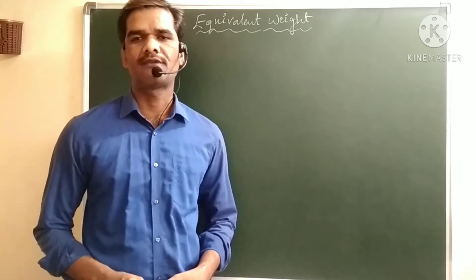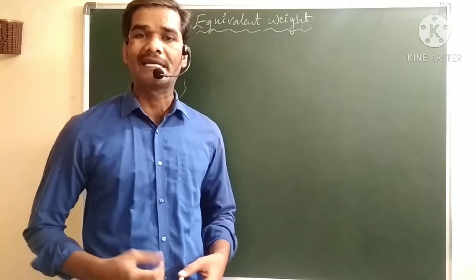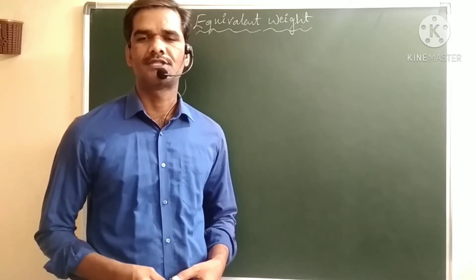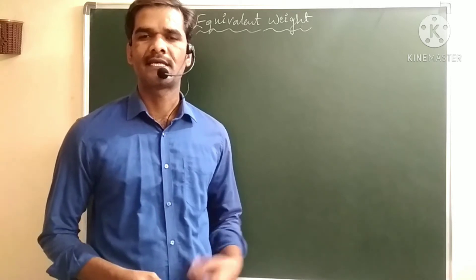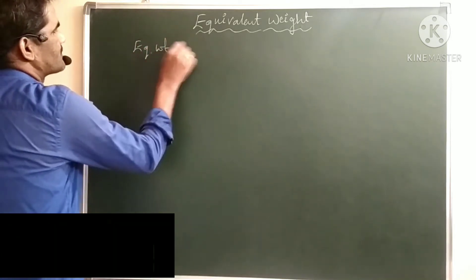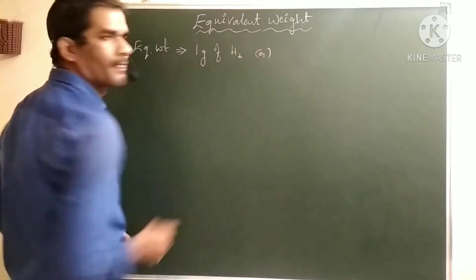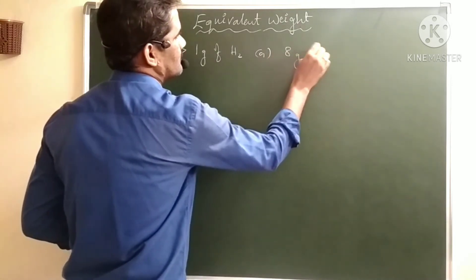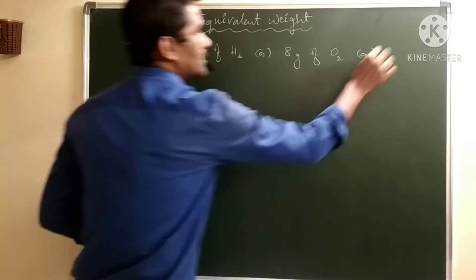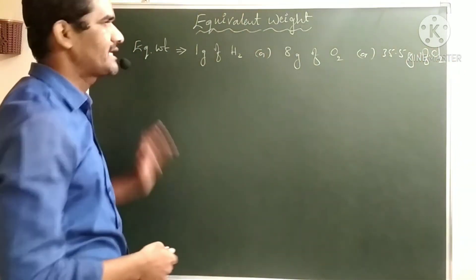What is an equivalent weight? Equivalent weight is the amount of substance which can completely react, or which can replace 1 gram of hydrogen, or 8 grams of oxygen, or 35.5 grams of chlorine. That amount we call its equivalent weight.